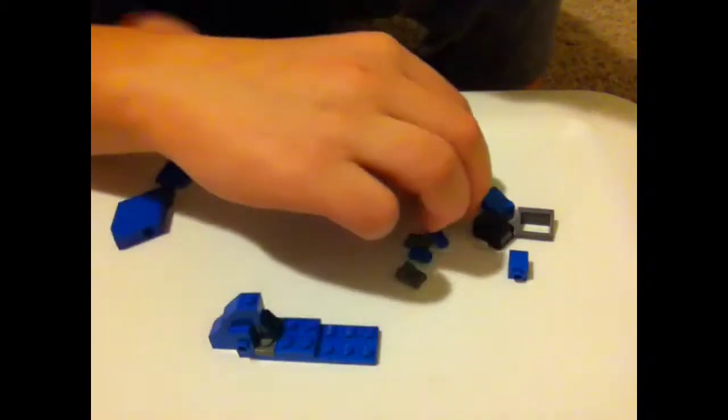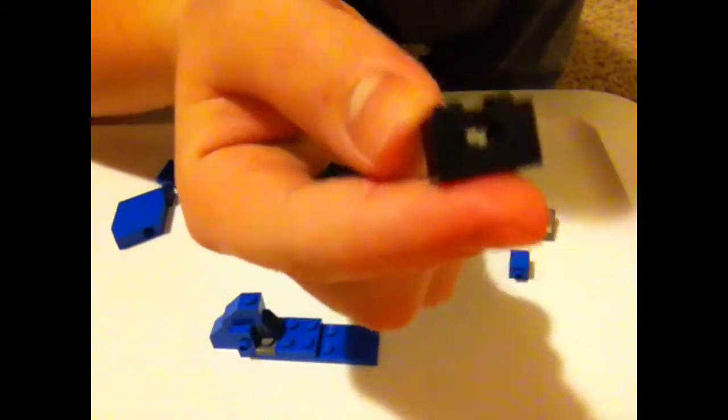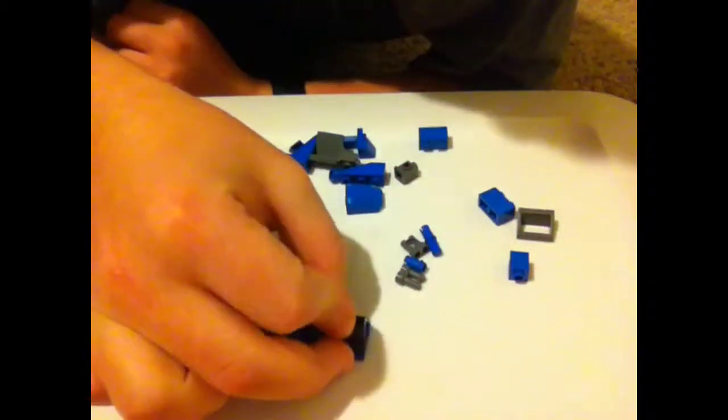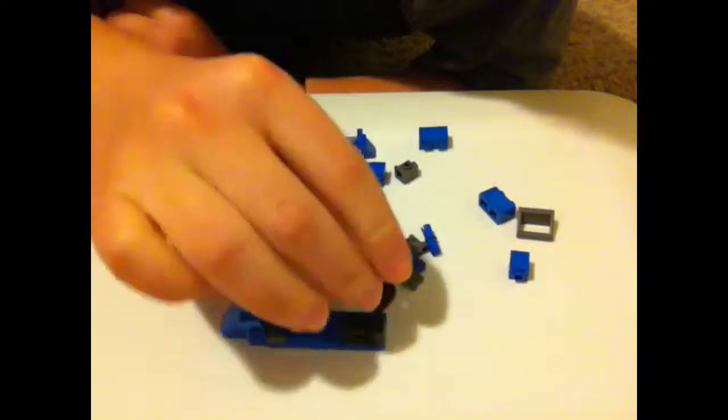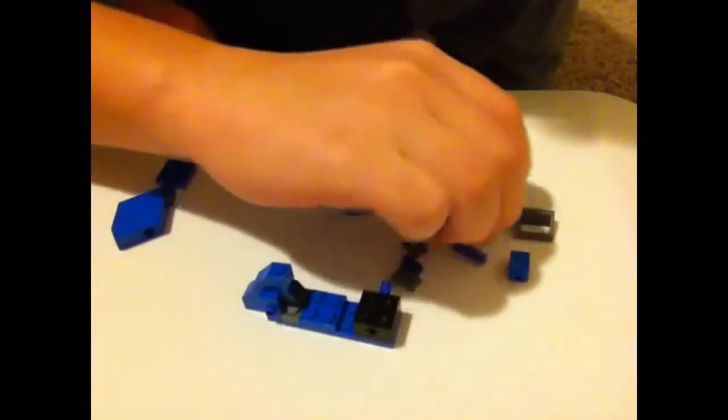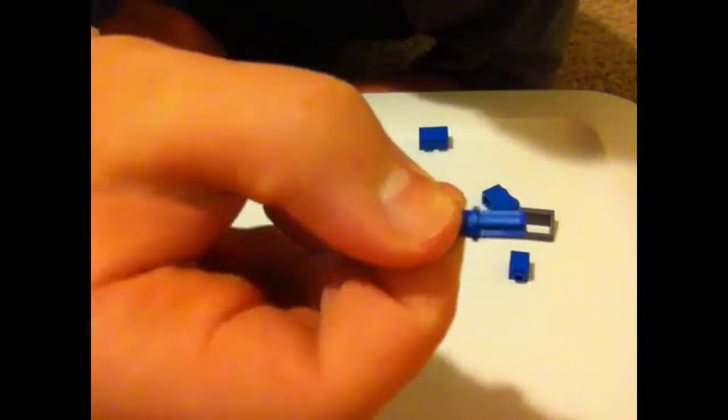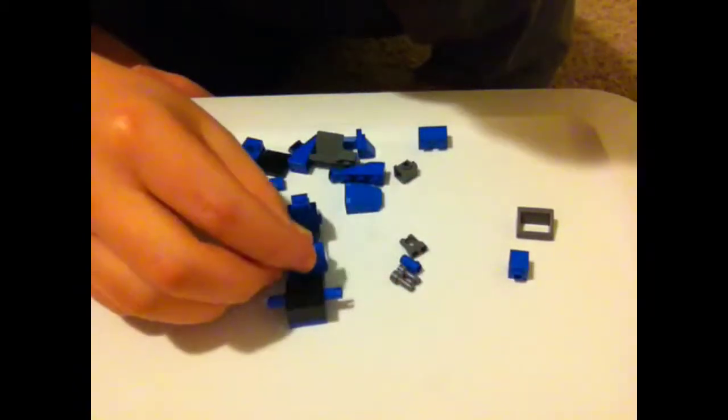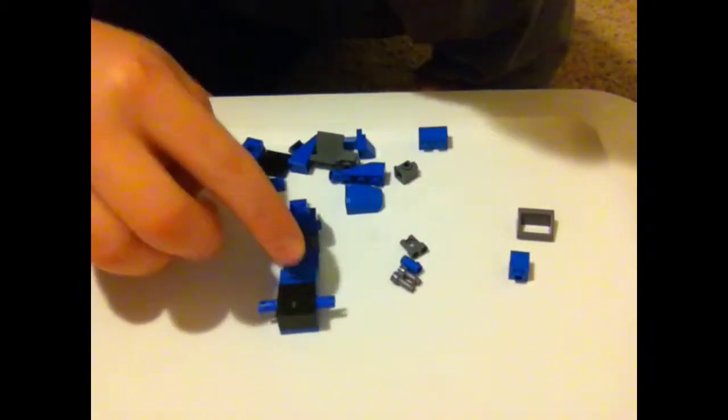Then we're going to take these. We'll take two of them, put one here and one here. And then we're going to take these and put them in them. Then we're going to take one of these, put it right here, and one of these and put it right here.